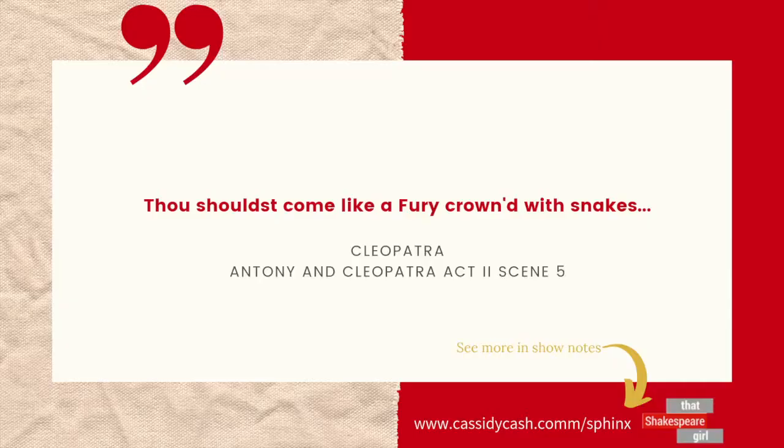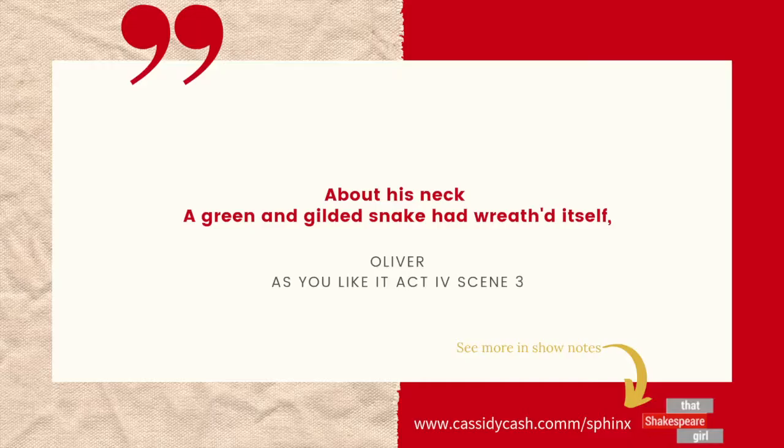When I branched out from the Sphinx as purely an Egyptian item to what other cultures in the 16th century might have been influencing the English understanding of the Sphinx, I found this one. Going back to Shakespeare's plays, this particular Ptolemaic history of the Sphinx shows up in Antony and Cleopatra when Cleopatra says 'Thou should come like a fury crowned with snakes.' It also shows up in As You Like It, where Oliver says 'About his neck, a green and gilded snake hath wreathed itself.' So there seems to be some pervasive history of the Sphinx and Greek mythology throughout Shakespeare's plays.